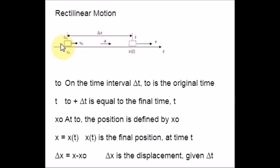t0 is nothing but on the time interval Δt, t0 is the original time. The original time t0 plus the change Δt is equal to the final time t. The final time is always denoted by t and this is denoted by original time which tends to change. And x0, it is the position defined by x0 at t0. And x(t) is nothing but the final position at time t. Δx as I already told is the change, I mean x minus x0. Δx is the displacement given by Δt.